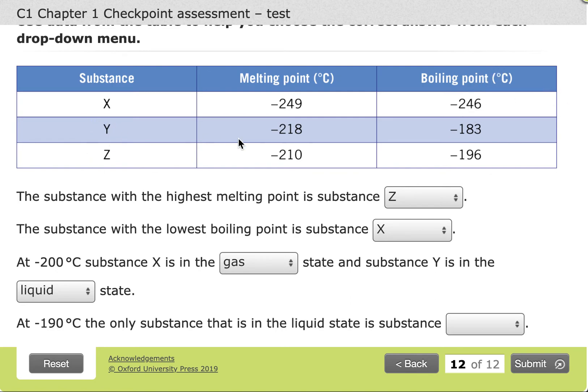If we're in substance Y, however, minus 190 comes between the two, and so we are in the liquid state for substance Y. I'll have a quick check for substance Z. Substance Z at minus 190 again comes on the right-hand side of my boiling point, and so the only one in liquid state is substance Y.